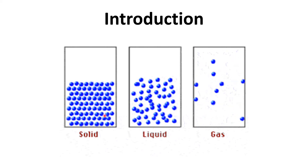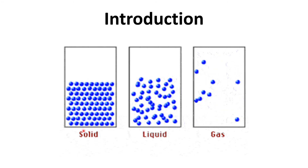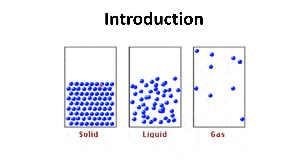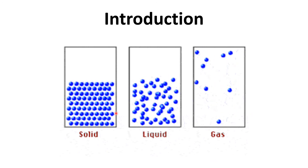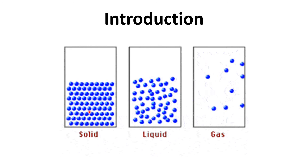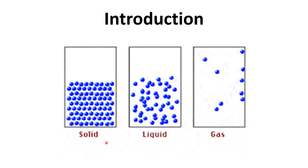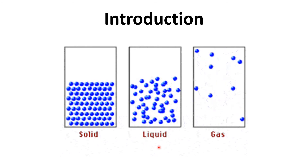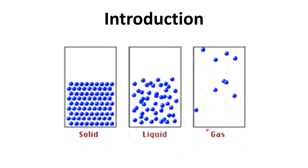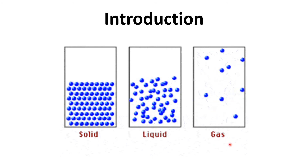This difference is due to the intermolecular forces between the particles. In solids, the intermolecular forces are the highest, and in gases they are the lowest. Solids have a definite shape and volume. Liquids do not have a definite shape, but they do have a definite volume. Gases have neither a definite shape nor a definite volume.